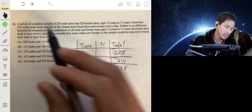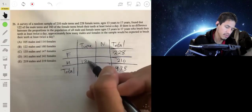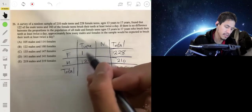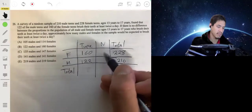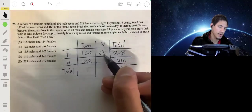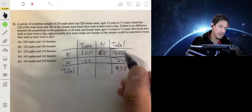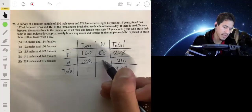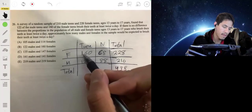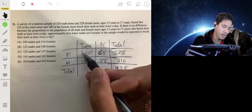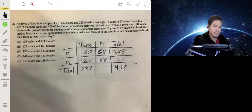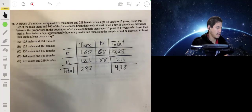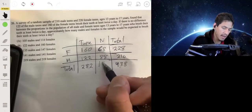122 of the male teens brushed their teeth twice a day, and 160 of the female teens brushed their teeth at least twice a day. So that means there will be 68 here that didn't brush their teeth of the females, and there would be 88 here, and down would be 282, and then we'll get 156 for that.